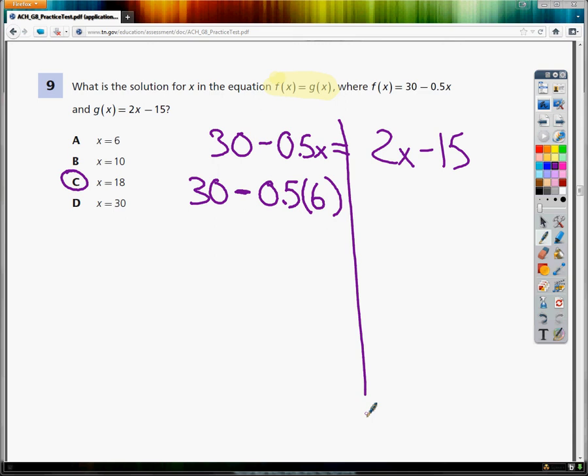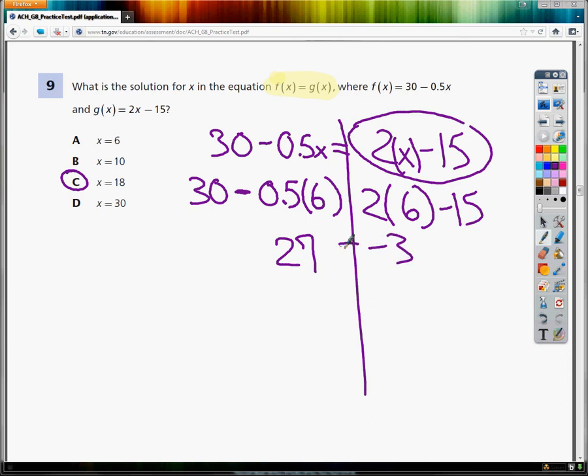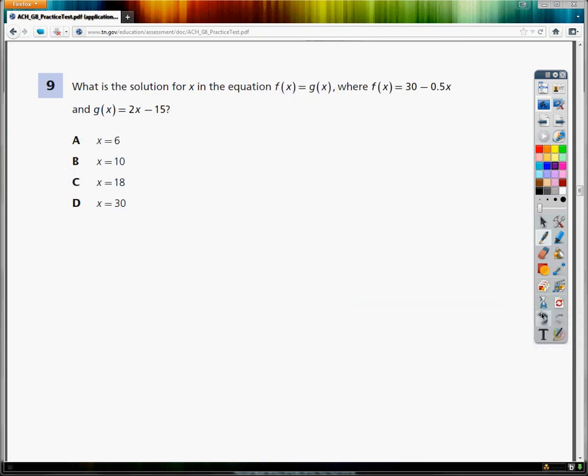So, I type in 30 minus 0.5 parenthesis 6. And I get 27. Now, I'm looking for the side on the right of the line. So, this. If I plug in 6 to give me the same 27 as below. So, what I'm going to do is put parenthesis around x. And hope this works. We know that it doesn't because we already solved it. But if I type in 2 parenthesis 6 minus 15, I'll get negative 3. Now, this statement would say that 27 is equal to negative 3. Well, we know that's not true. So, x equals 6 cannot be the right answer.